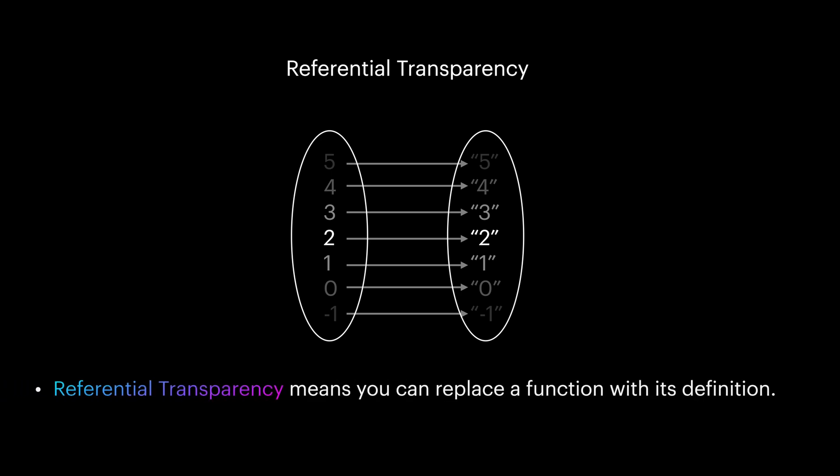This is called referential transparency and is a huge advantage of functional paradigm over imperative paradigm. Think about testing, optimizations, concurrency, parallelism, and all other benefits this power of replacing things gives us, which we couldn't achieve easily with, for example, object-oriented programming.